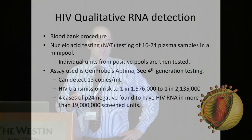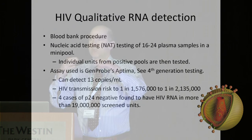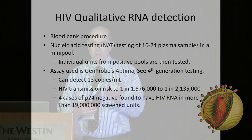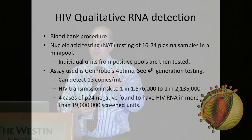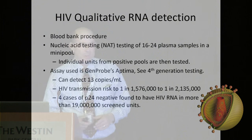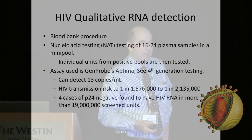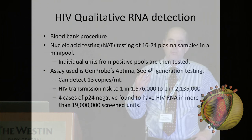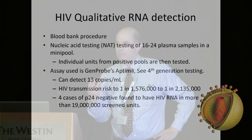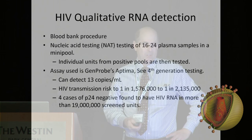Qualitative RNA detection is also used in the blood bank to test pooled units for HIV; if positive, individual units are then tested. The only assay approved for this qualitative PCR test is the Genprobe Aptima assay.